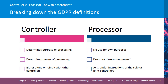Breaking that down a little further, on the left-hand side, the controller determines the purpose of processing — what is done with the personal data and why it's done. The processor doesn't determine any of the purposes. The controller also determines the means of processing — that's the how of the processing — and the processor doesn't determine the means.